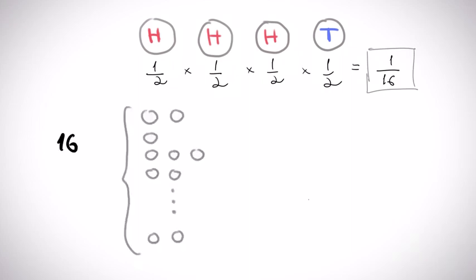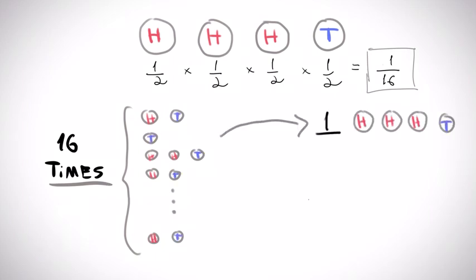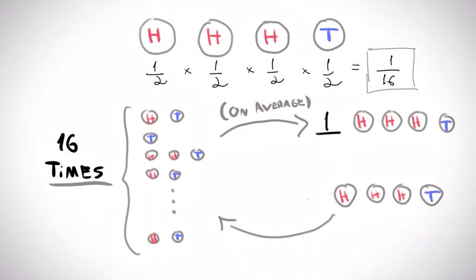This means that for every 16 attempts, on average, one sequence will have three heads and one tail. Another way to put it is that if someone shows you a sequence with exactly three heads, a good guess would be that they have tried the game at least 2 to the 4 or 16 times.